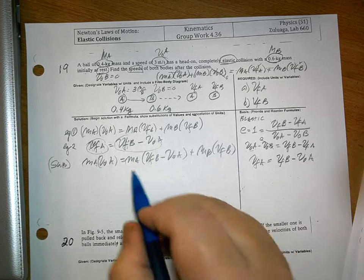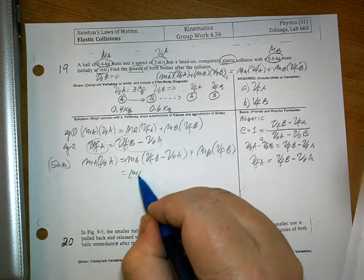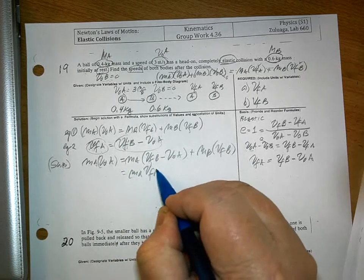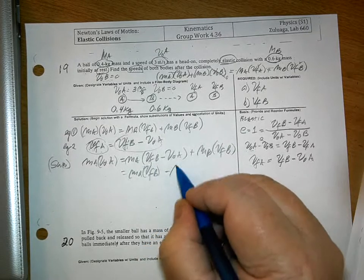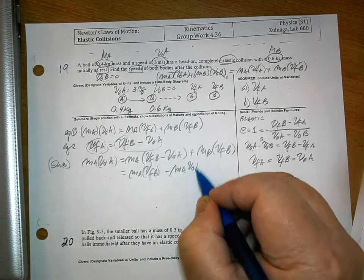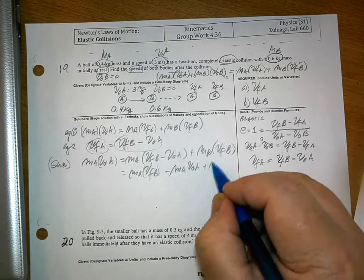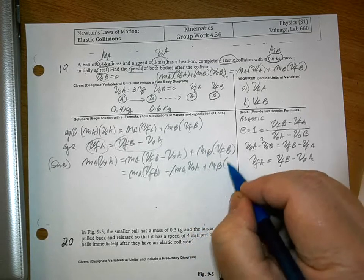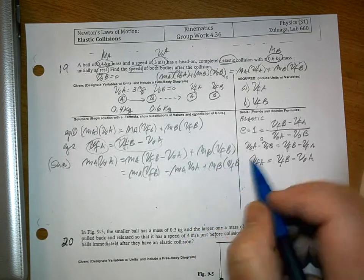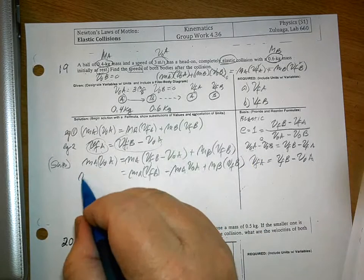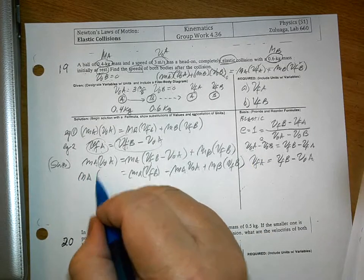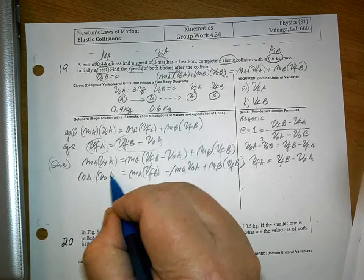Then, distributing, we have MA VFB minus MA VOA plus MB VFB. And then, this one, MA VOA.